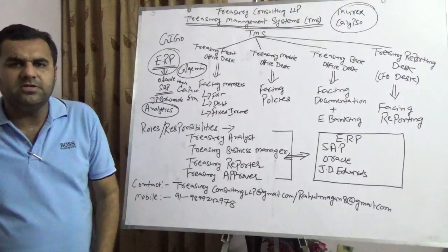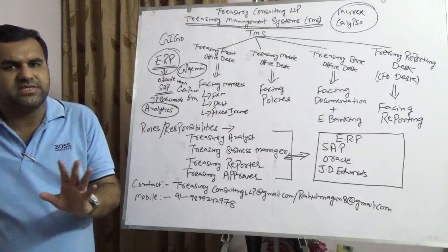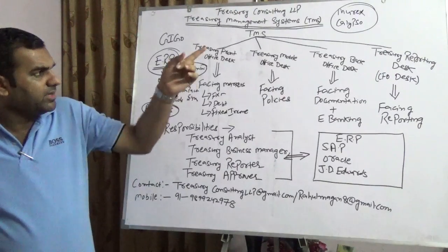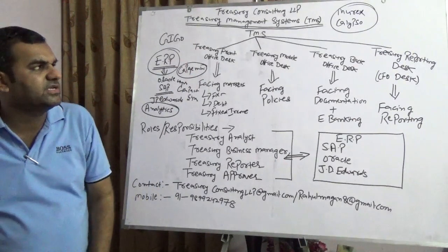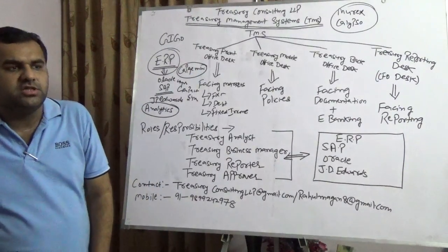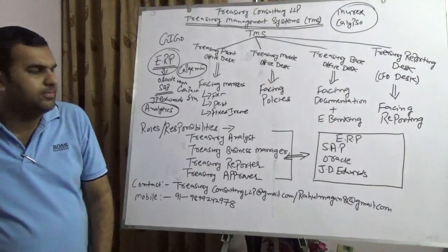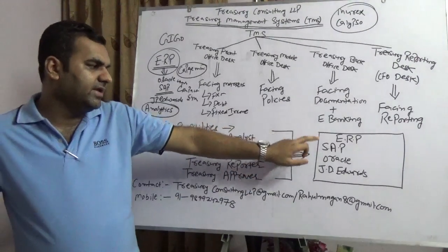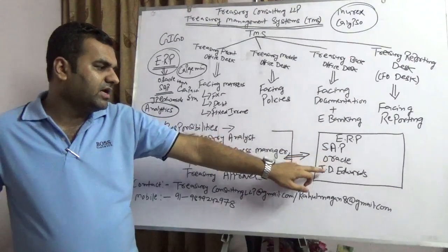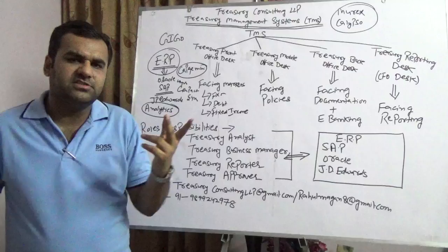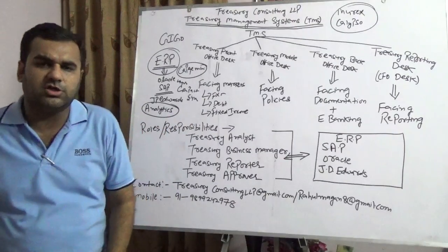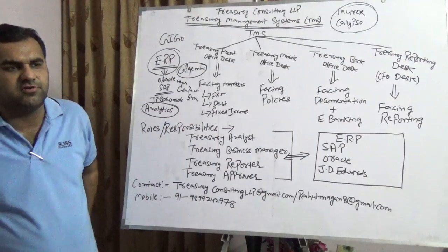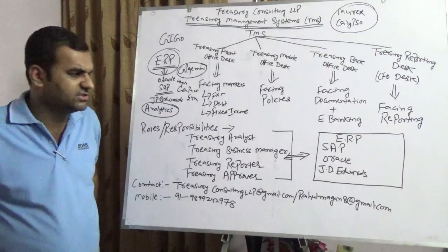Please note that treasury management system is not a standalone software. Like Murex and Calypso, they work with ERP — enterprise resource planning. They work with SAP, Oracle, and JD Edwards, the top three enterprise resource planning software across the globe.